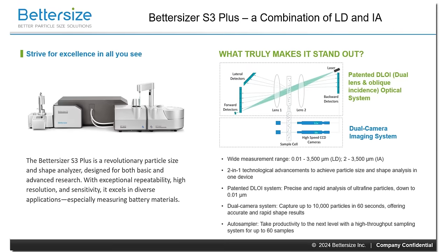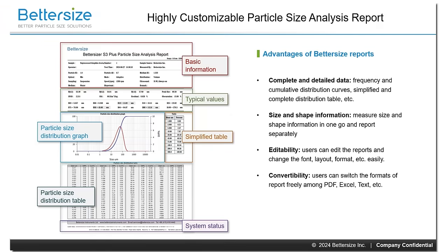We are thrilled to introduce the Betasizer S3 Plus particle size and shape analyzer. After a test, the data is collected. Here we have unprocessed graphite tested with the Betasizer S3 Plus, and got a particle size report in this way.